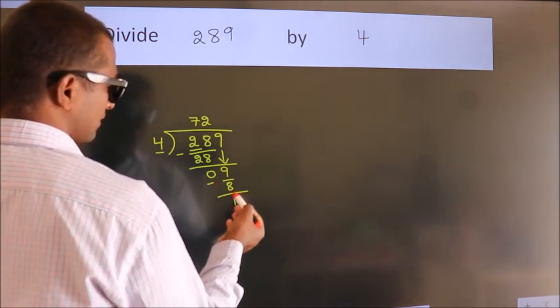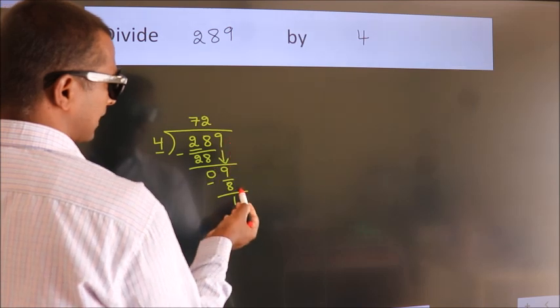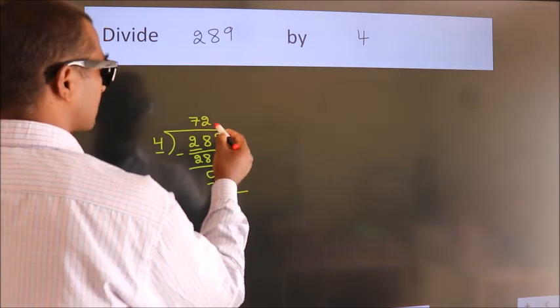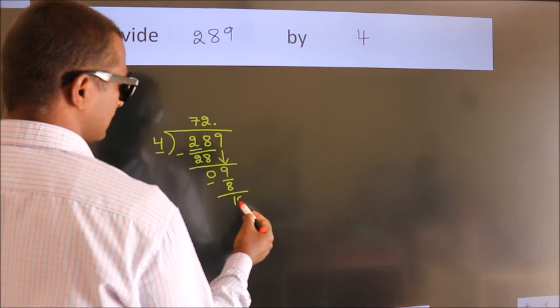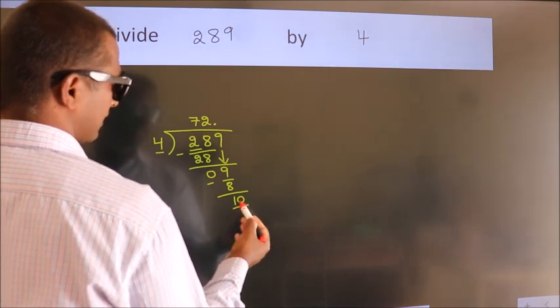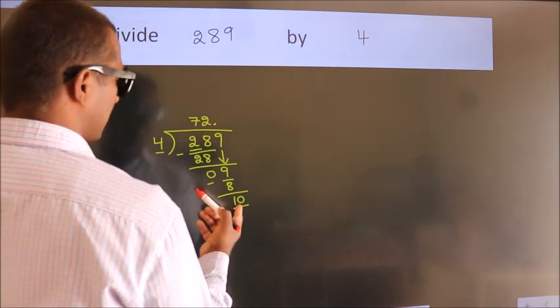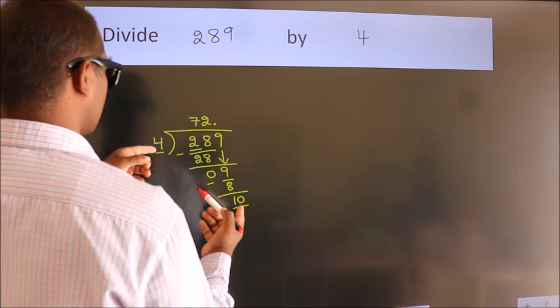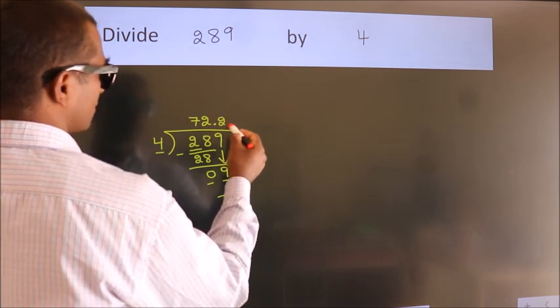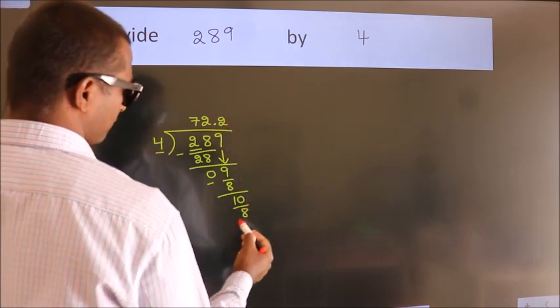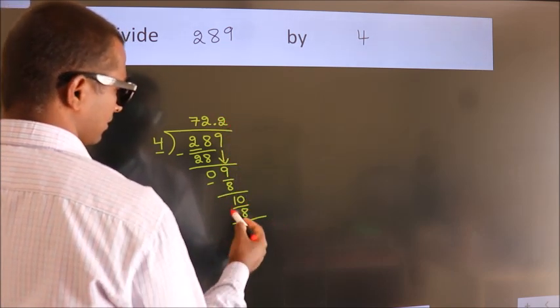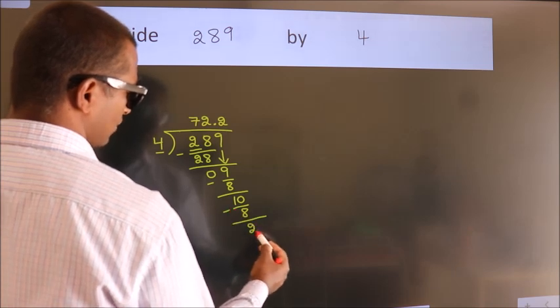After this, no more numbers to bring down. So what we do is put a dot and take 0. So 10. A number close to 10 in the 4 table is 4 times 2 is 8. Now we subtract and get 2.